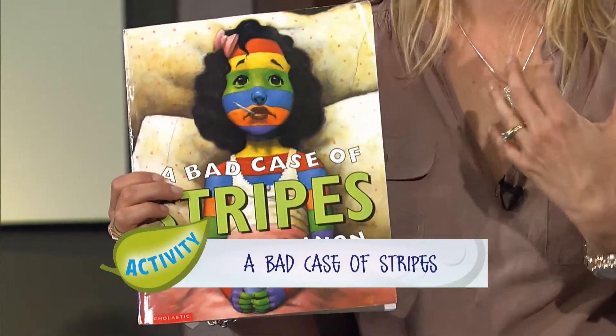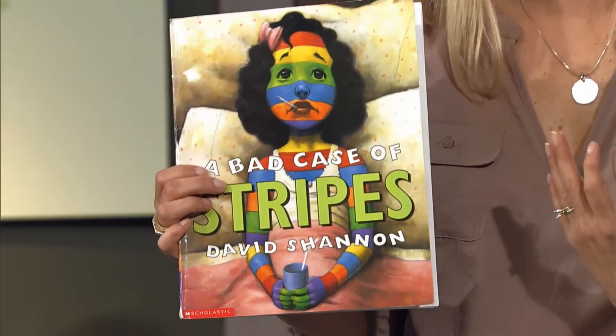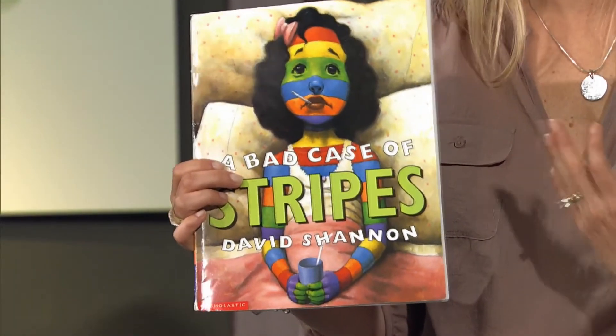One of the books that we talk about in the manual and use is called A Bad Case of Stripes by David Shannon, and it is just a great book at illustrating independent thinking and being proud of the things that make you maybe different or the things that make you stand out from your classmates. We have some discussion questions listed in the manual that can take you through discussing what happened with the little girl in the book and how she ultimately did what was true to herself and true to her heart.